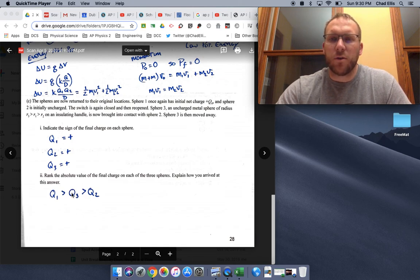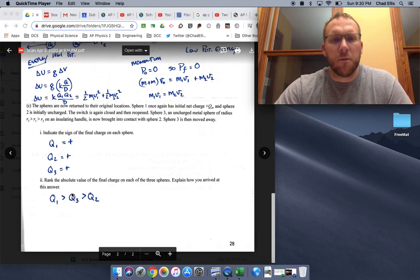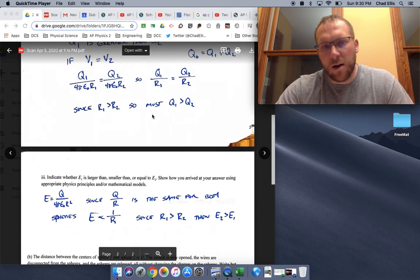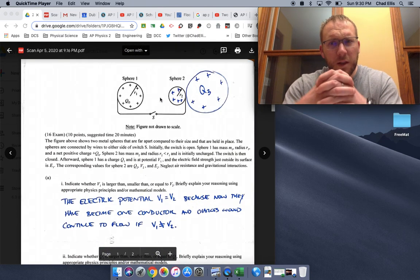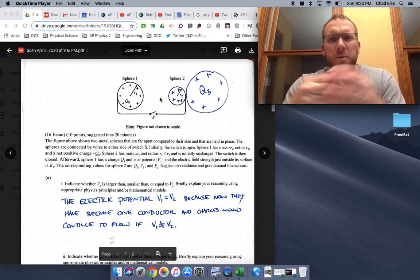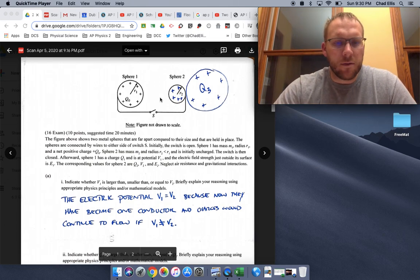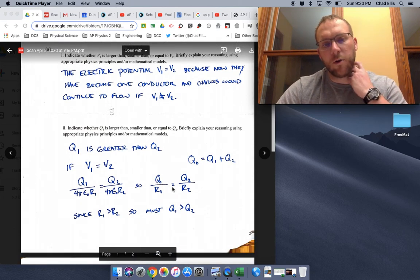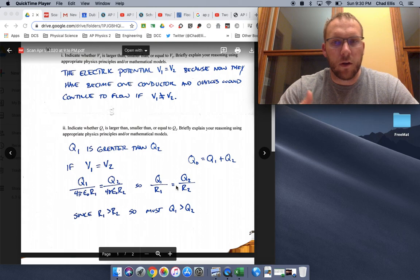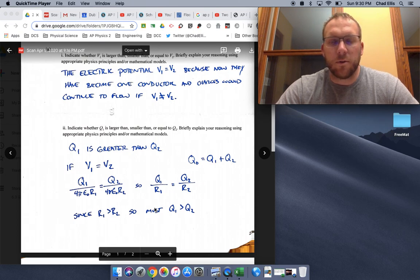Three, however, is going to be bigger than two for this exact reason. But essentially this exact same reason because their potentials, when they are touching, they would be one conductor. So their potentials would have to be the same, which means their charges would be based on this ratio Q one over R one, or in this case, Q two over R two and Q three over R three. Because R three is greater than R two, Q three must be greater than Q two.